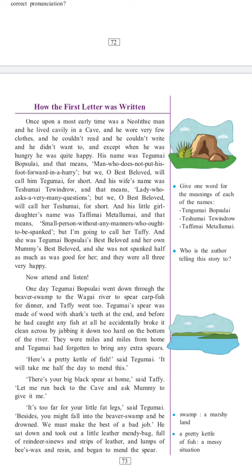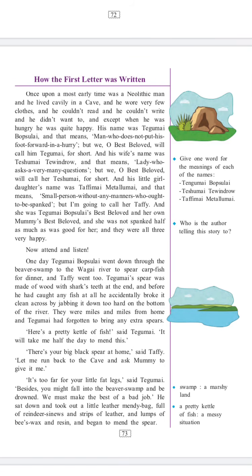And she was Tegumai Bobsulai's best beloved and her own mummy's best beloved, and she was not spanked half as much as was good for her. And they were all three very happy. Now attend and listen. One day, Tegumai Bobsulai went down through the beaver swamp to the Wagai River to spear carp fish for dinner, and Taffi went too. Tegumai's spear was made of wood with shark's teeth at the end.